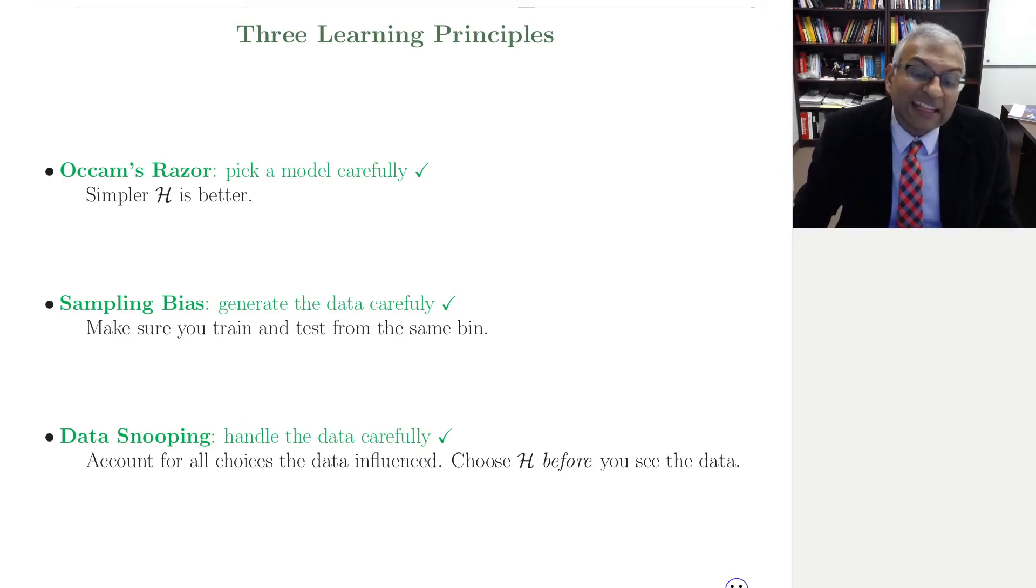Data snooping. Handle the data carefully. Occam's razor deals with what you do before you see the data. Make sure you pick a simple hypothesis set. Sampling bias deals with how you generate the data to learn. And data snooping deals with how you handle the data. Data is a very precious resource. You have to handle it very carefully.